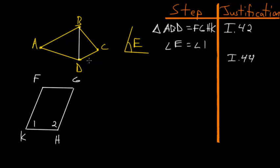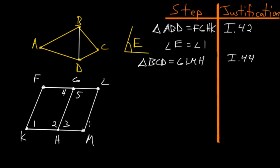Now I can use Book 1 Proposition 44 to construct a parallelogram equal to triangle BCD, along line GH and containing angle E. Triangle BCD will be equal to parallelogram GLMH. Let's construct that parallelogram. Within this newly constructed parallelogram, angle 3 is equal to angle E.